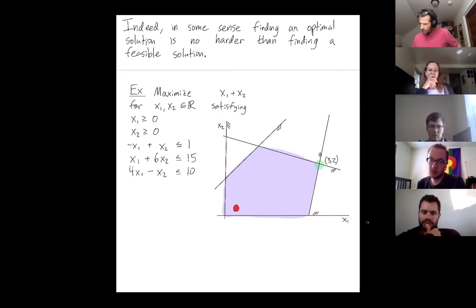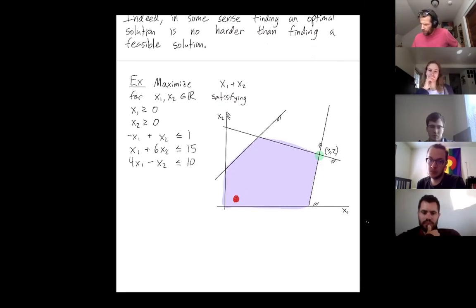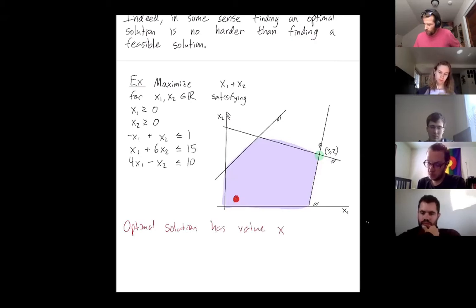You know, the optimal solution has value x1 plus x2 equals, so in this example, it's going to be two plus two, which is five.